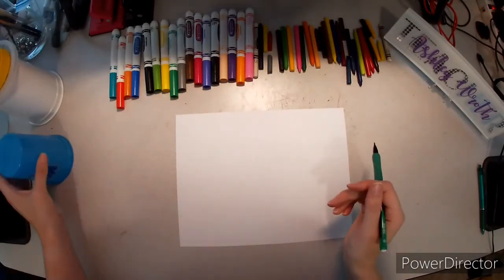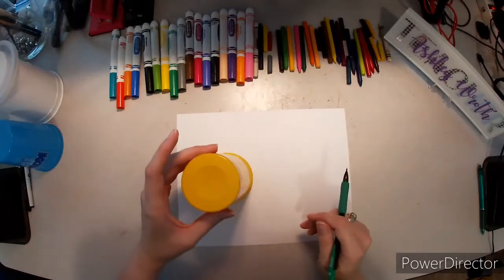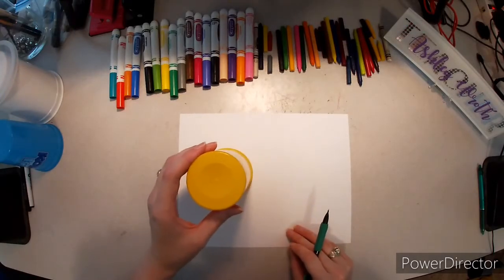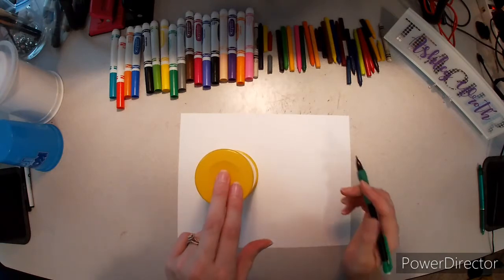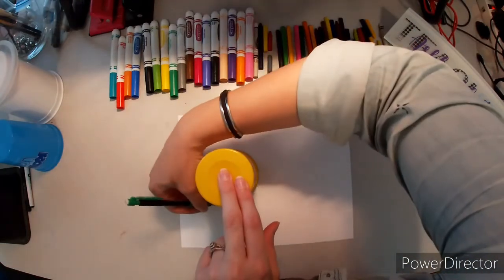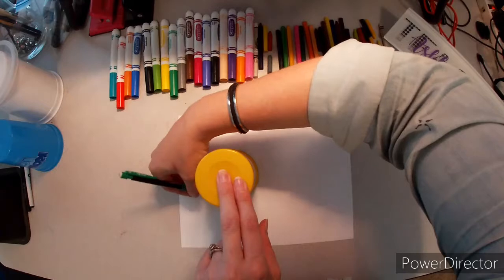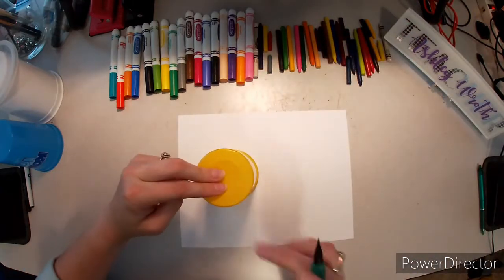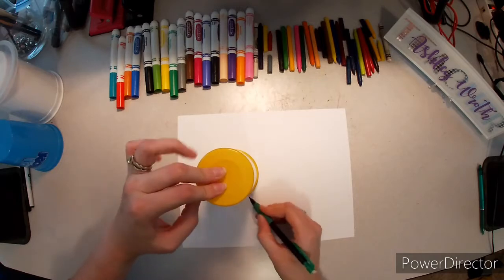For our rabbit, you are going to need a tracing cup. Don't put it in the middle. Put it slightly off to the side. Hold it down, bring your arm all the way around, push against the cup and the paper at the same time, and finish your circle.